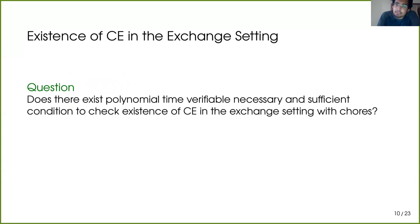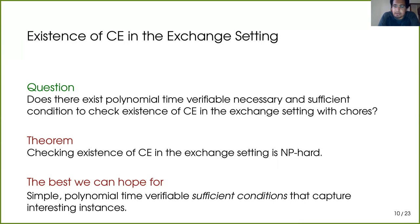We ask whether there exist polynomial-time verifiable necessary and sufficient conditions for checking existence of competitive equilibrium in the chore setting. Unfortunately not. This is the first main result of our paper: checking the existence of competitive equilibrium in the exchange setting with chores is NP-hard. Therefore the best we can hope for is polynomial-time verifiable sufficient conditions that are simple, natural, and capture interesting instances.